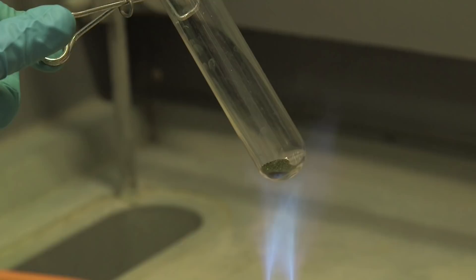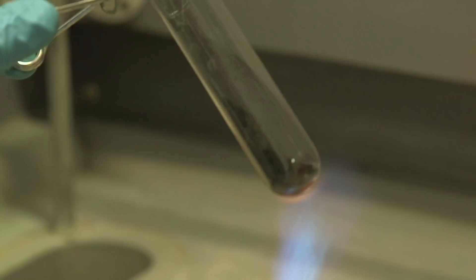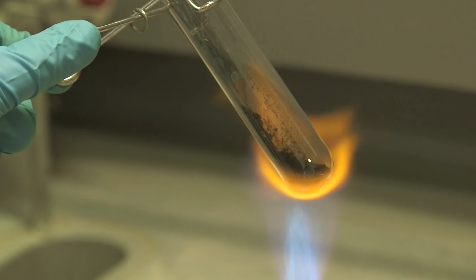That movement there, you can see it going right the way up the tube. And now it's dropping back down again. And what's happened there, in the heat, we've changed the oxidation state of the manganese to plus six. So it's now K2MnO4.